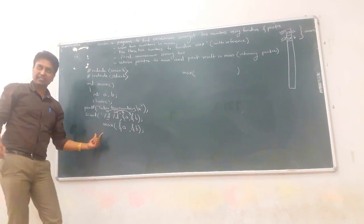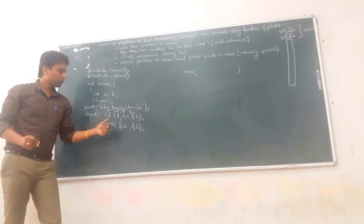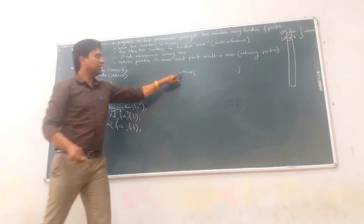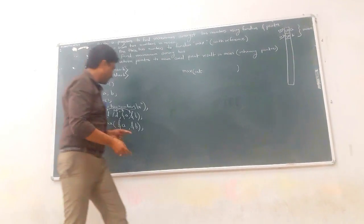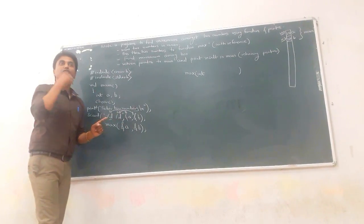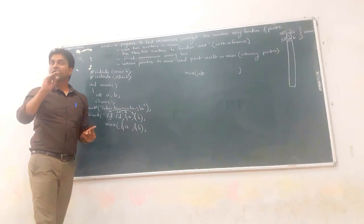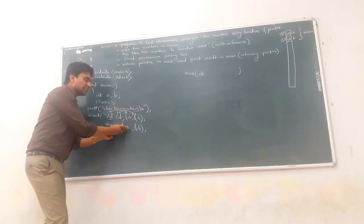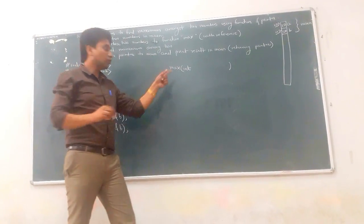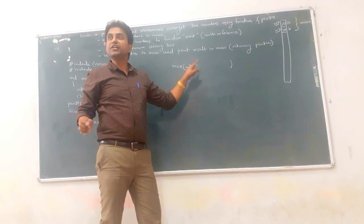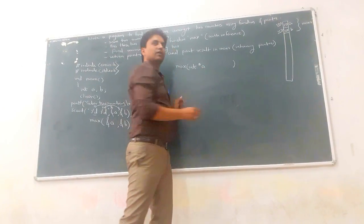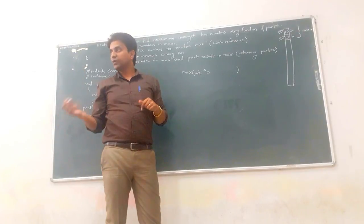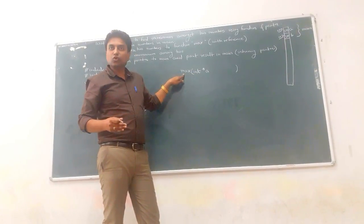With reference means by address. The A and B in the main function are value type variables storing actual values, while A and B in the max function are pointer types storing addresses of integer variables. When you pass address A, it is cached into pointer variable A containing 100, and address of B is cached into pointer B containing 102 — so A and B point to the value variables.